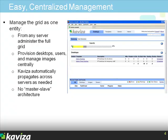There is no master or slave in this architecture — no single connection broker, no single vCenter-type management server. Every server in the grid is a connection broker, a management server, and a provisioning engine. So every server in the Kaviza grid is equally replaceable, and yet the grid works as one cohesive entity.